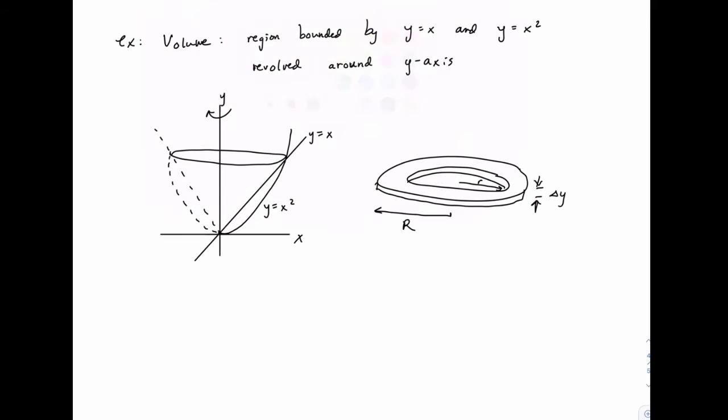So the straight line is easier, because y equals x is the same as x equals y. With the other one, we need to solve for x by taking the square root of both sides, and we get x equals the square root of y.